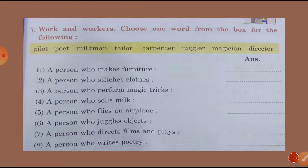Work and workers — choose one word from the box for the following. The words are: pilot, poet, milkman, tailor, carpenter, juggler, magician, director. First: a person who makes furniture. Second: a person who stitches clothes. Third: a person who performs magic tricks. Fourth: a person who sells milk. Fifth: a person who flies an aeroplane. Sixth: a person who juggles objects. Seventh: a person who directs films and plays. Eighth: a person who writes poetry.